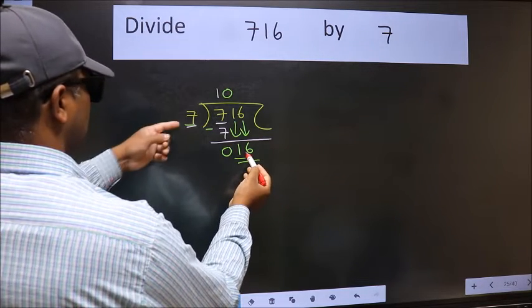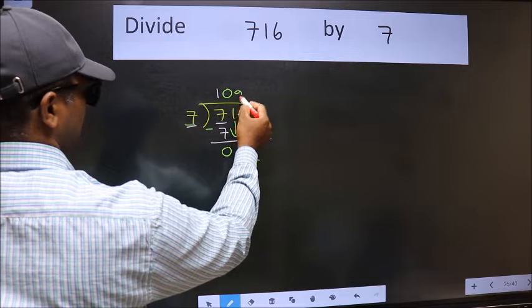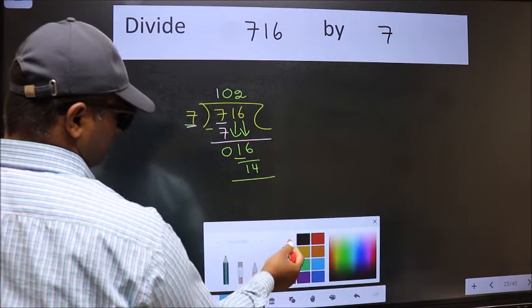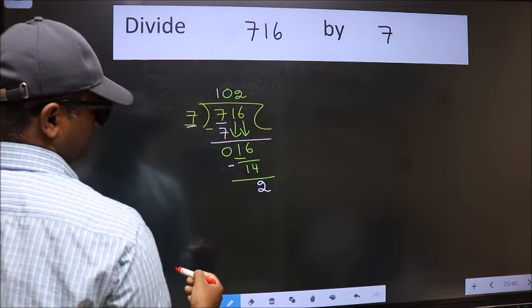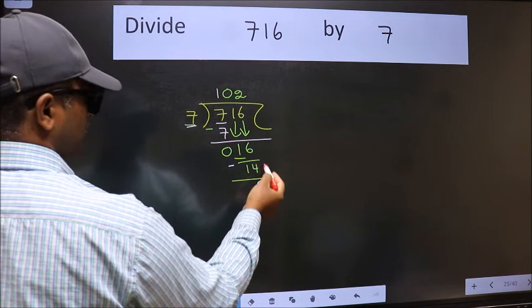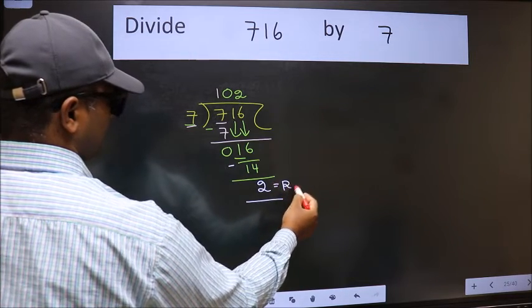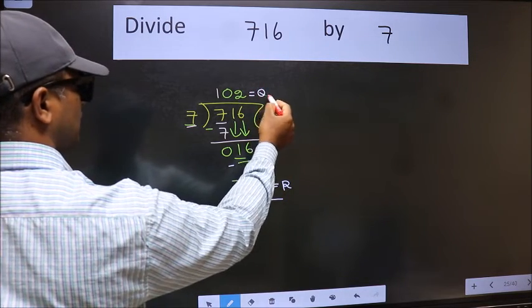A number close to 16 in 7 table is 7 times 2, 14. Now we should subtract. We get 2. No more numbers to bring it down. So we stop here. This is our remainder and this is our quotient.